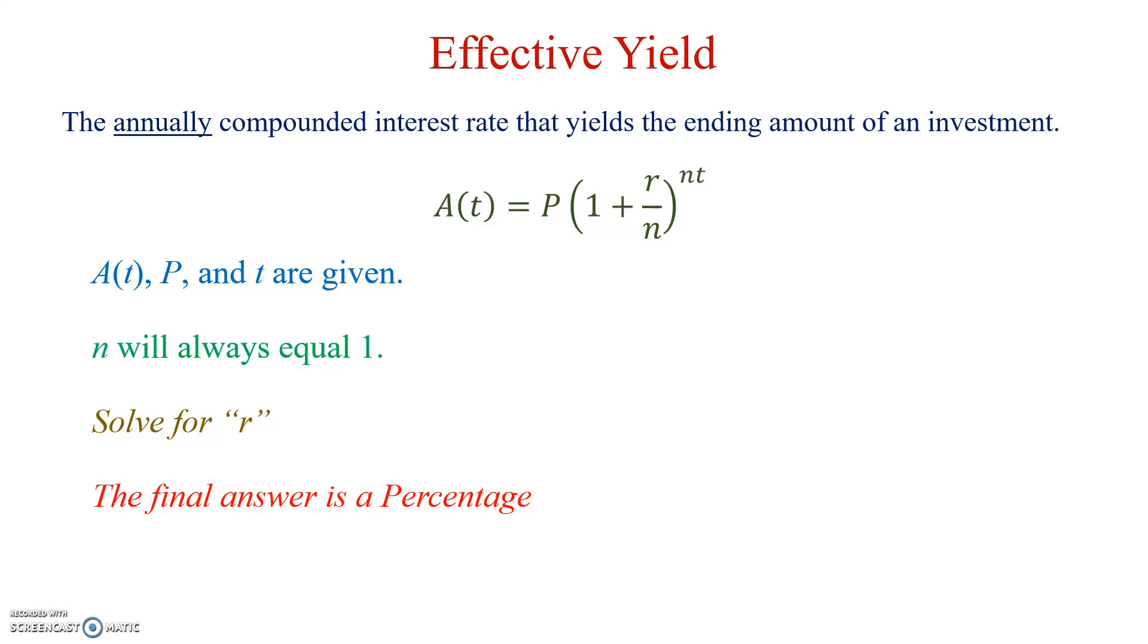Just like previously, we were given the rate as a percentage, and we solved and converted it to a decimal. Here, our answer will be a decimal, but we have to convert it to a percent. So if N was actually equal to 1, and we substituted it in, we would actually simplify our compound interest formula to be an effective yield formula. A(t) equals P times 1 plus R to the T. So, very straightforward equation. We'll look at a couple examples.